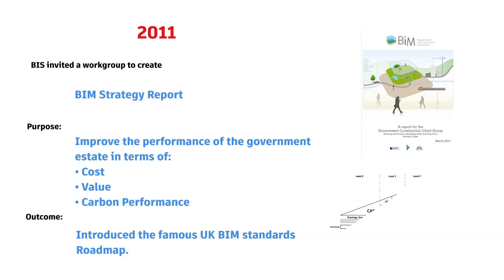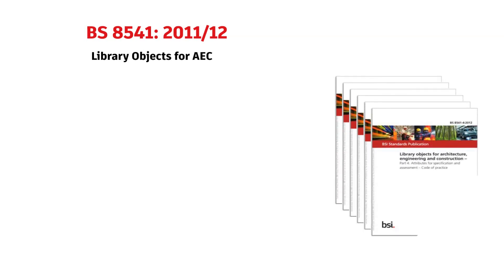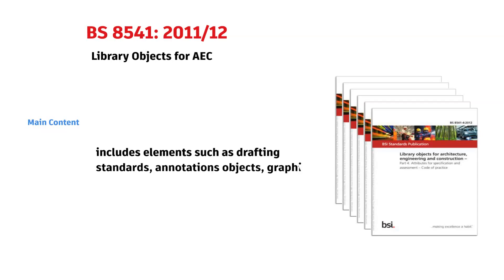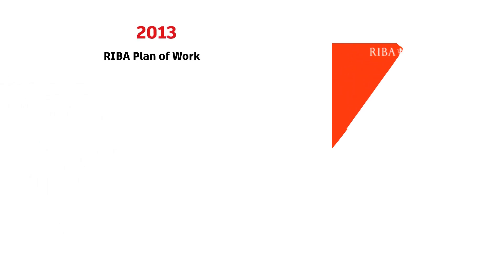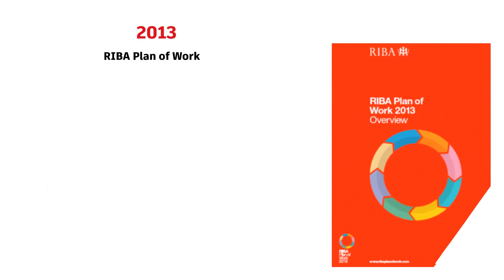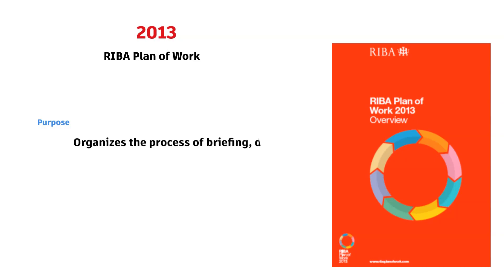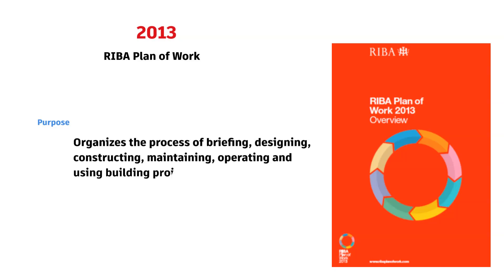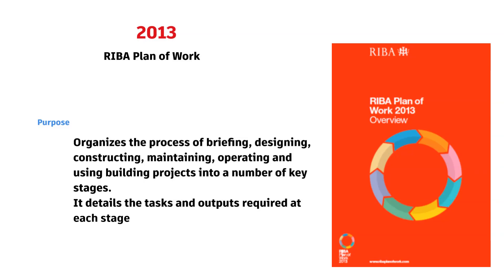The report introduced the famous UK BIM Standards Roadmap. Also in 2011 and 2012, the BS8541 series was issued. It includes elements such as drafting standards, annotation objects, graphical level of detail, and naming conventions. In 2013, RIBA issued the RIBA Plan of Work. It organizes the process of briefing, designing, constructing, maintaining, operating, and using building projects into a number of key stages. It also details the tasks and outputs required at each stage, which may vary or overlap to suit specific project requirements.